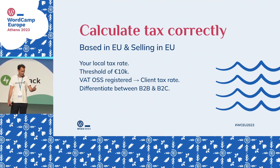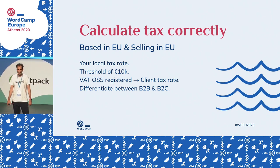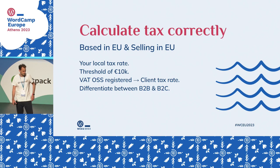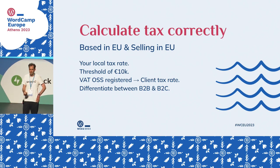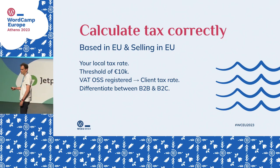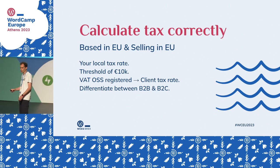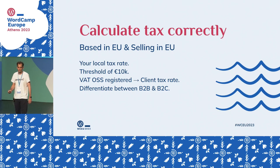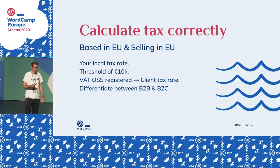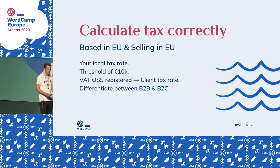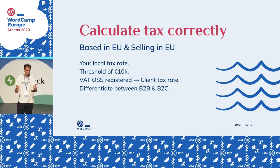OSS — and this is probably the only time today you'll see it where it doesn't mean open source — stands for One-Stop Shop. Once you're registered for the One-Stop Shop, you collect the tax rate of your buyer's country. So if I sell a t-shirt to a German consumer, I calculate the German tax rate. If my buyer is in Greece, I calculate the Greek rate. For Spain, it remains the Spanish tax rate.